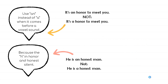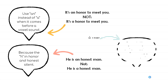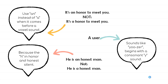Here are two important examples. We say 'It's an honor to meet you,' not 'a honor,' because AN is used before a vowel sound. Similarly, 'He is an honest man,' not 'a honest man,' because the H in honor and honest is silent. In a third example, the word 'user' sounds like it begins with a consonant Y sound, so we say 'a user,' not 'an user.'